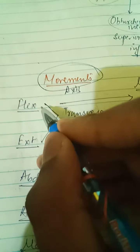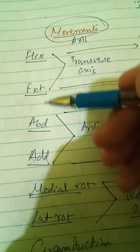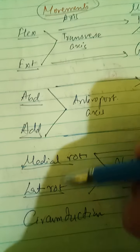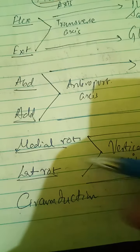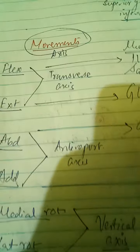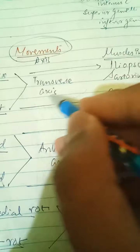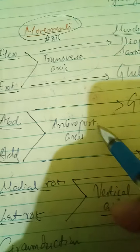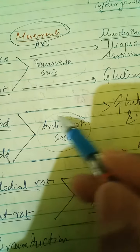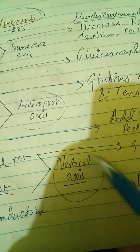Coming to the movements of the hip joint: there is flexion, extension, abduction, adduction, medial rotation, lateral rotation, and circumduction (a combination of all). Flexion and extension occur along the transverse axis; abduction and adduction along the anteroposterior axis; and medial and lateral rotation about the vertical axis.